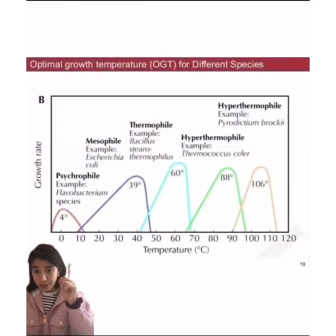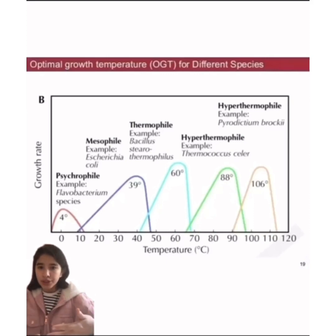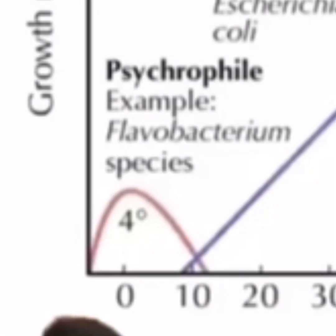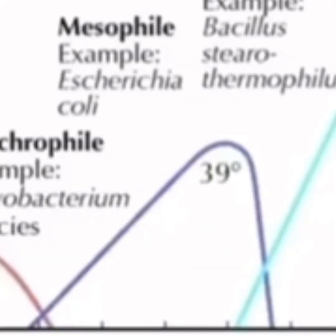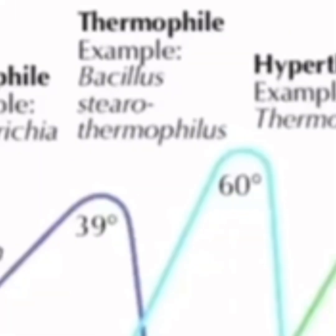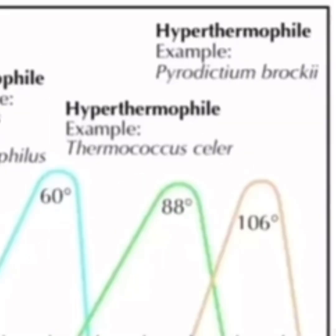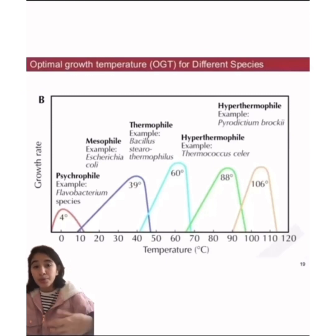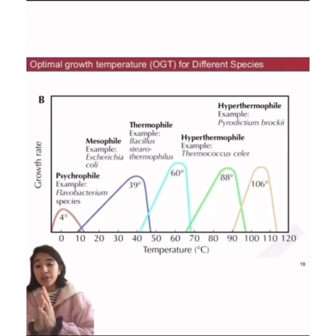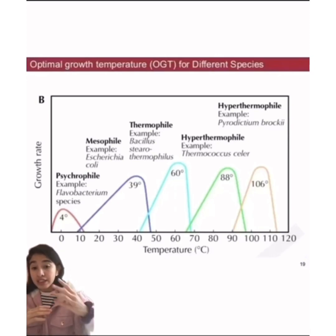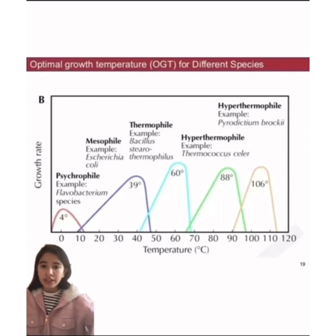As we can see in the following chart up here, there are different types of bacteria that like different types of temperatures. For example, the psychrophile is a cold lover, the mesophile is a moderate lover, and the thermophile prefers moderate temperatures — meaning it doesn't like very high or very low temperatures. The hyperthermophile is a heat lover, meaning it can grow more easily when temperatures are high, while the psychrophile grows more easily when temperatures are lower.